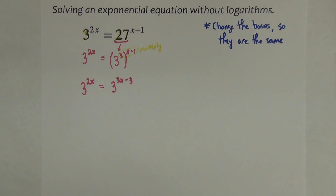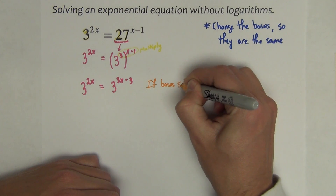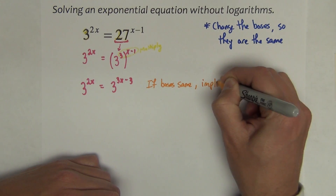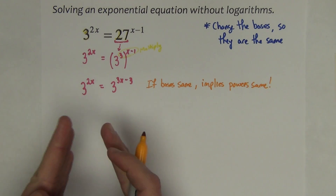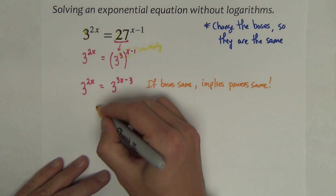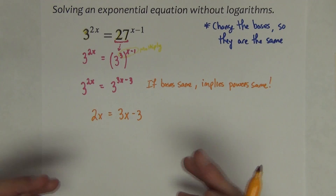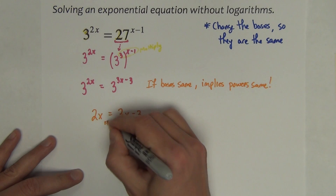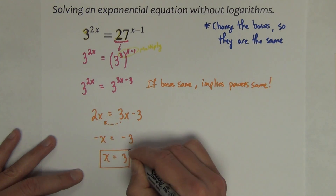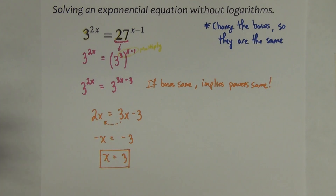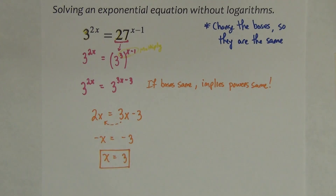If the bases are the same, that implies the powers are the same. I've got 3 and 3 on each side, so the power of 2x is equivalent to the power of 3x minus 3. We now have an equation to solve that doesn't involve exponents anymore. Moving the 3x over gives negative x equals negative 3, so x equals 3. That's an exponential equation without logarithms — make the bases the same number, set the powers equal, and solve.